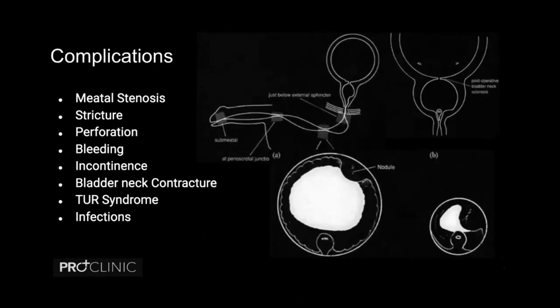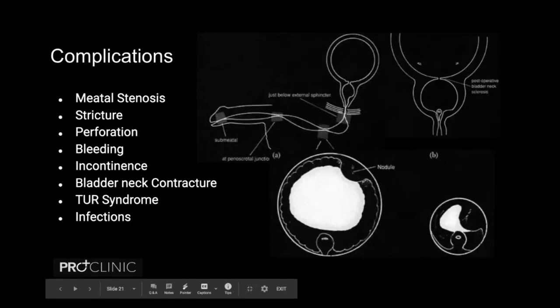Coming to complications: there are four zones in the urethra most susceptible to injury, the most prominent being at the verumontanum junction — the fulcrum where most action happens. Meatal stenosis (sub-meatal stenosis to be precise) is one of the most common complications. Other complications include strictures, bladder perforation (which can sometimes become intraperitoneal), extensive bleeding difficult to control, sphincter damage leading to incontinence, bladder neck contracture (if insufficient prostate is removed at the neck or extensive coagulation is used in that area), TURP syndrome, and infections.